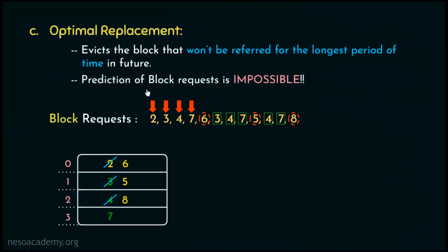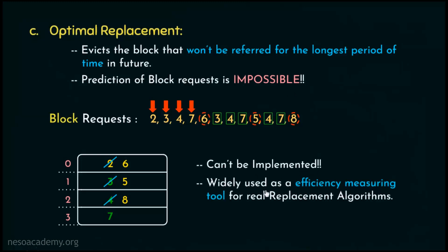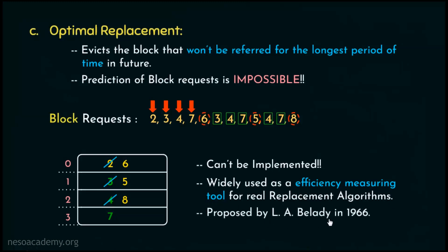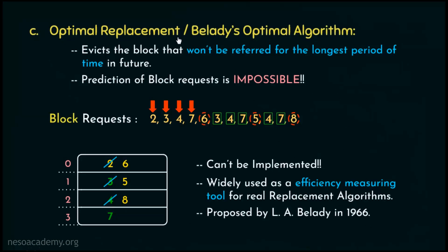Since prediction of block requests is impossible, the optimal replacement policy can't really be implemented. However, it is widely used as an efficiency-measuring tool for real replacement algorithms. Since it produces the optimal outcome, it serves as a benchmark for other replacement algorithms. It was proposed by L.A. Belady in 1966 and is also known as Belady's Optimal Algorithm.